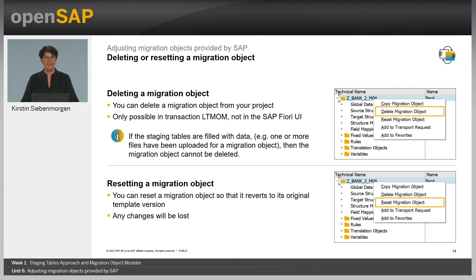You can delete a migration object from your project. This can only be done in the Migration Object Modeler, not in the Fiori UI. If the staging tables are filled with data, the migration object cannot be deleted. If you want to revert your migration object to its original template, you can reset a migration object — any changes done will be lost.